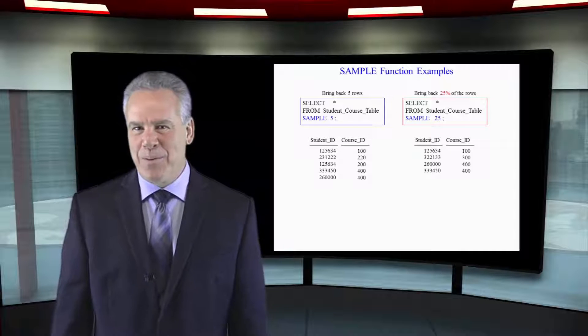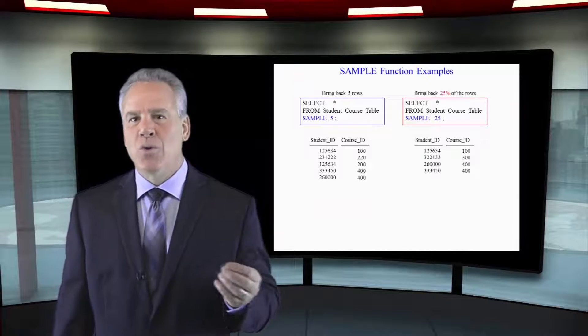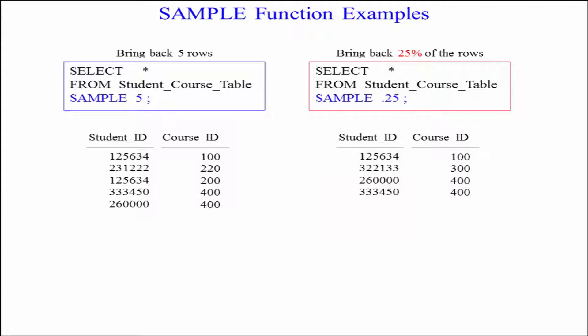Here is the sample command and I've got two queries for you. Select everything from student course table sample five. Five random rows will come back.